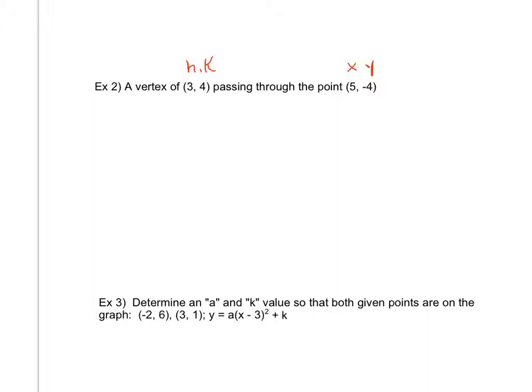So my general form is y equals a times x minus h squared plus k, where I want h, k, and a all filled in. I can't plug in for a because I don't know it, but I can plug in for h and k and then also for x and y and use that to determine my a.